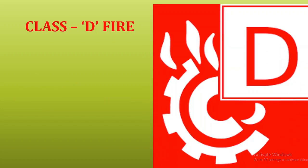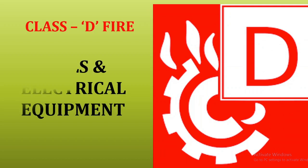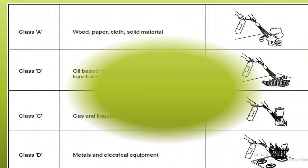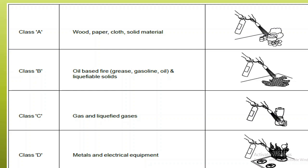Class D fire involves metals and electrical equipment. Class D fire extinguishers are specifically designed for metal fires. We have covered Class A, Class B, Class C, and Class D fires, each requiring their own designated fire extinguisher.